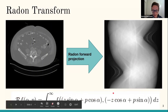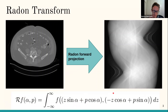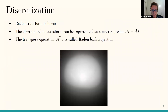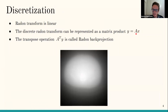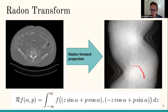If we work on images we need to discretize the Radon transform, and we obtain a linear transformation. If we describe the image as a vector x, we have a matrix-vector product where y is the sinogram measured from our sensor.